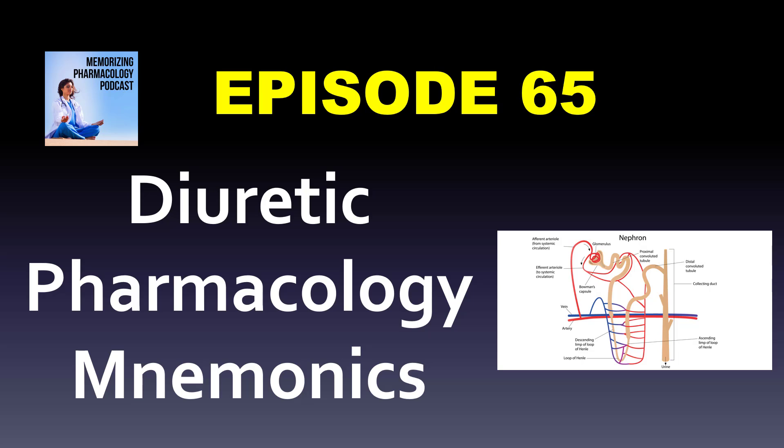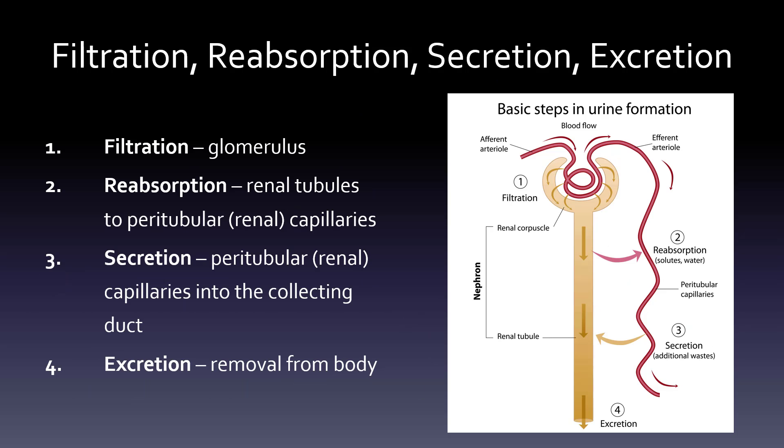Today we're going to go over diuretic pharmacology mnemonics, and we'll start with a brief review of what happens with urine formation — four words you really need to know. Filtration happens at the glomerulus, which just means bundle of string because it's all convoluted. And reabsorption happens at the renal tubules, to the peritubular or renal capillaries.